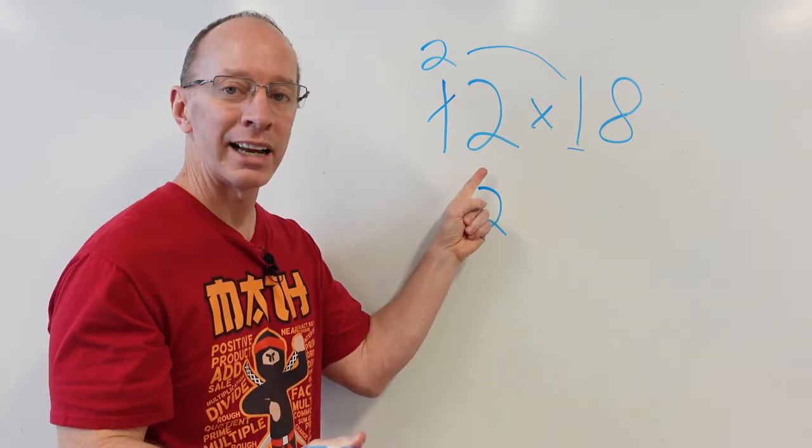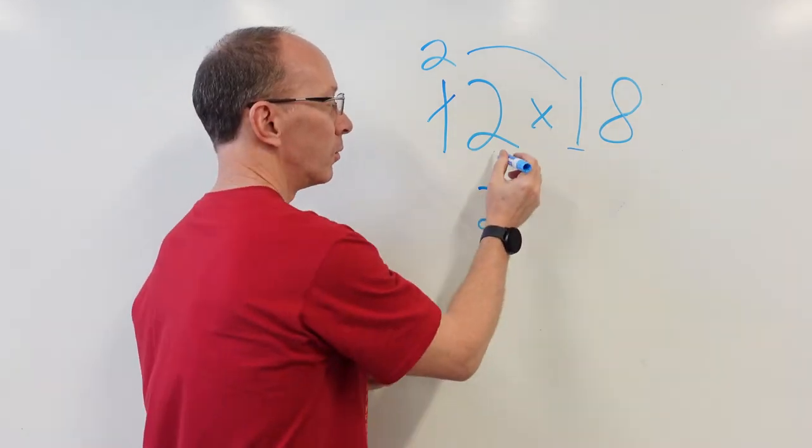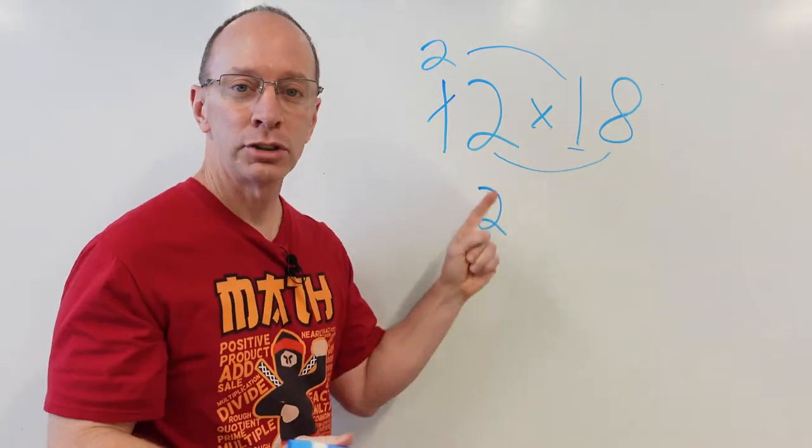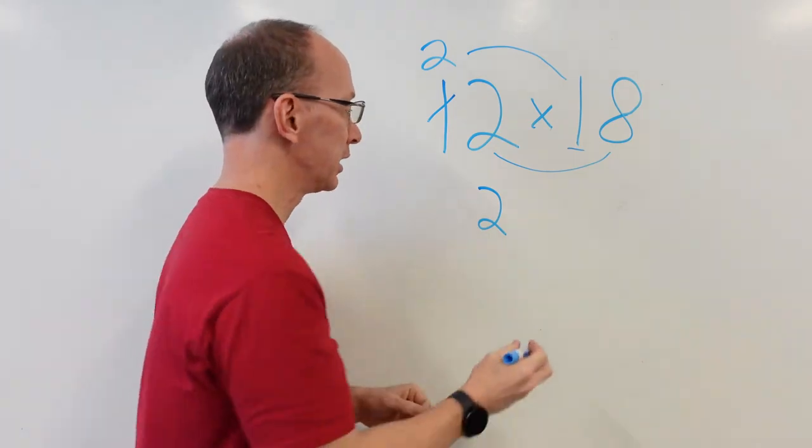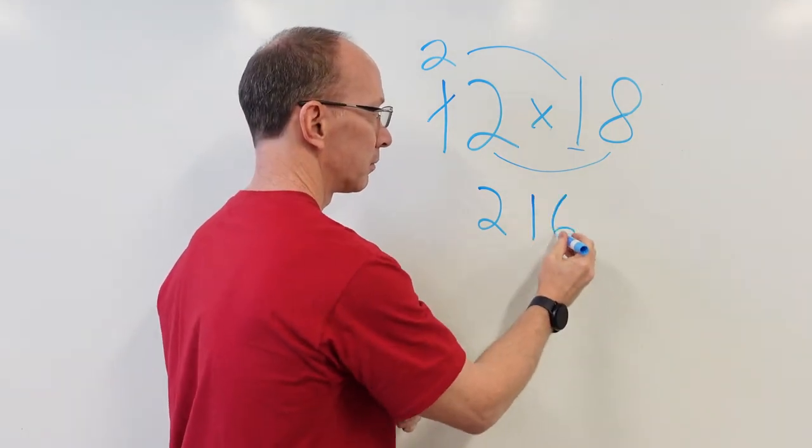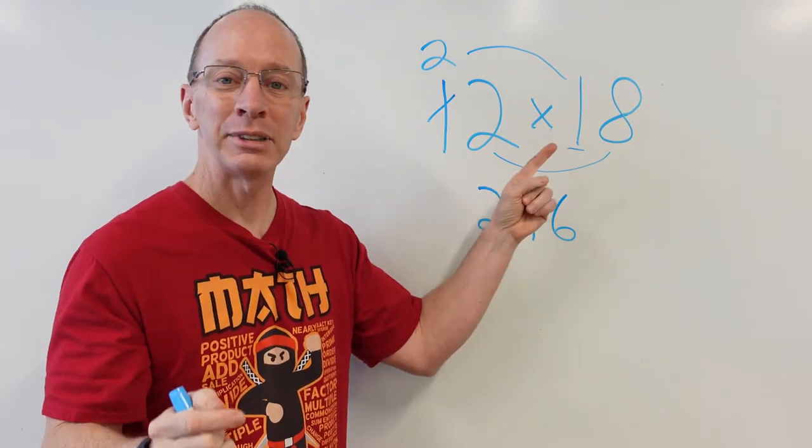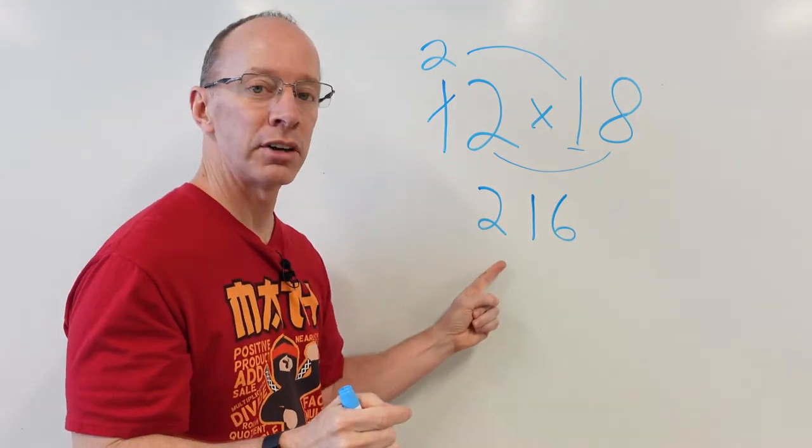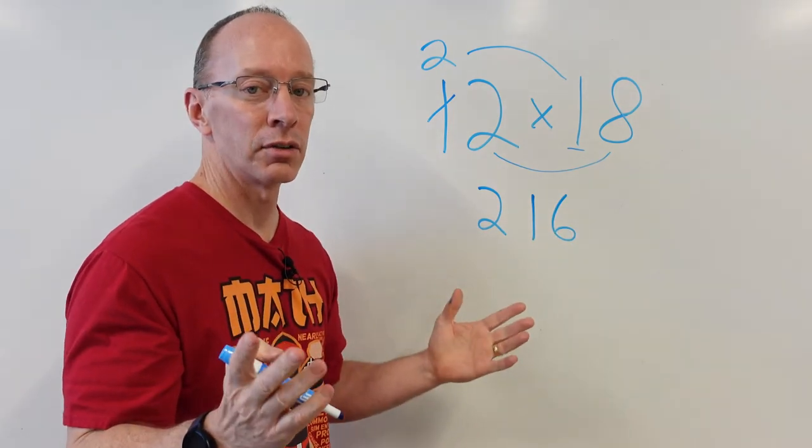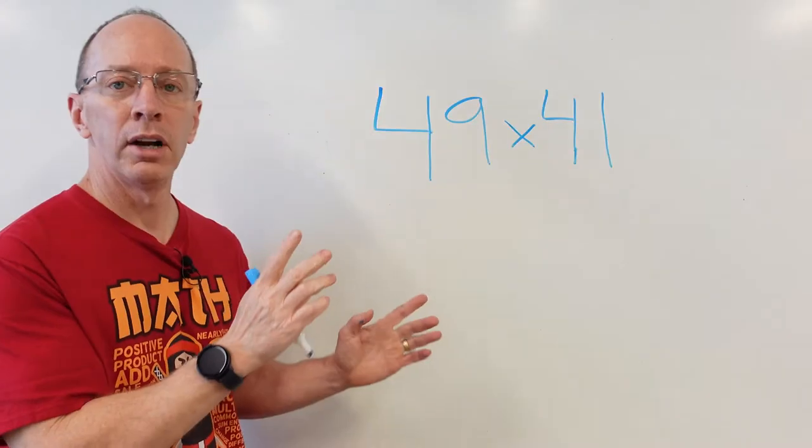Now, I multiply the ones. This two and the eight. Two times eight, sixteen. Twelve times eighteen equals two hundred sixteen. Ready to do another one? Yeah! Let's do it. Boom. Here we go.